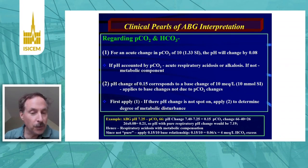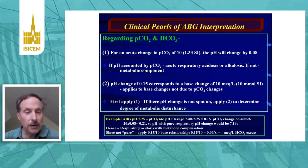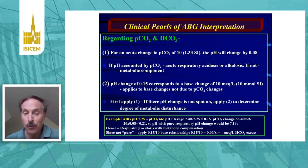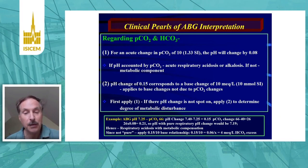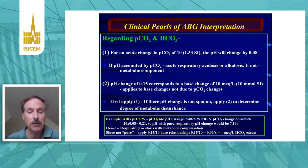For example, below you we see a pH of 7.25 and a PCO2 of 66. The pH change is 0.15 from normal, and the PCO2 change from normal is 26. By applying rule number one, 26 times 0.08 equals 0.21, so the pH with a pure respiratory change would be 7.19. The change in pH is less than expected, hence the respiratory acidosis is compensated by a metabolic component. Since this is not a pure respiratory acidosis, we apply rule number two and find that there is a 4 milliequivalent bicarbonate excess — hence the pH was not as low as we would have calculated by rule number one alone.